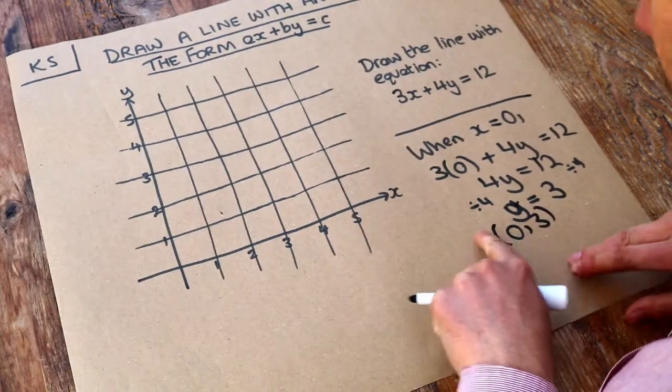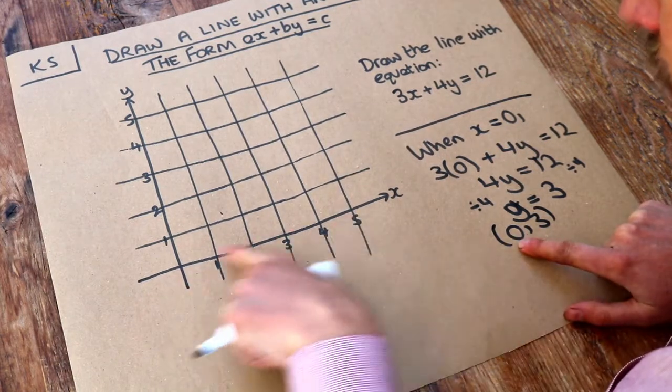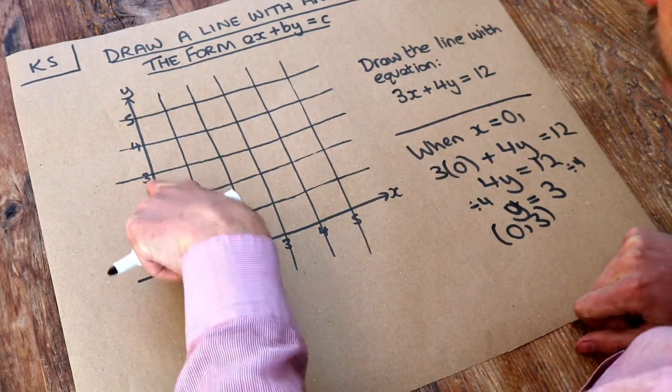Let's plot that. That's the x value, how far we go along x, so zero, and the y value we go up to three. So it's this point here.